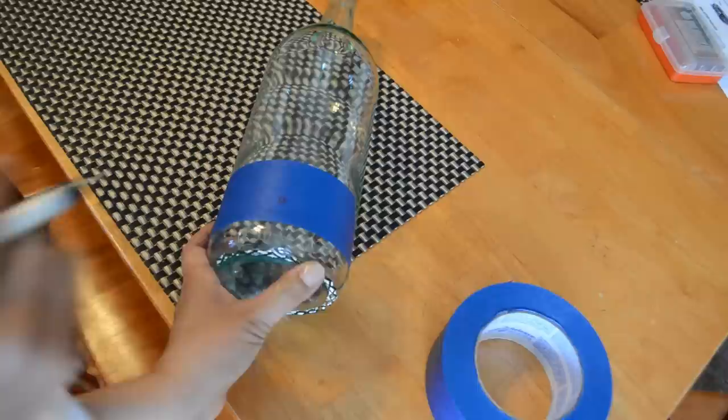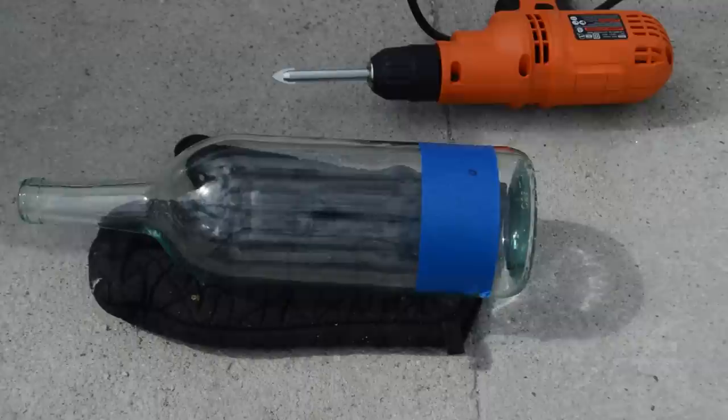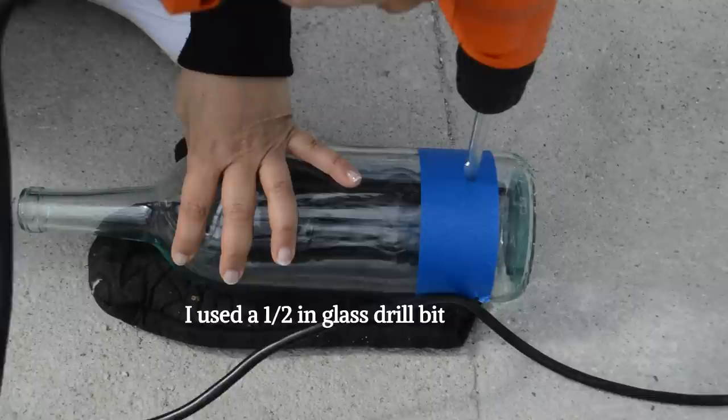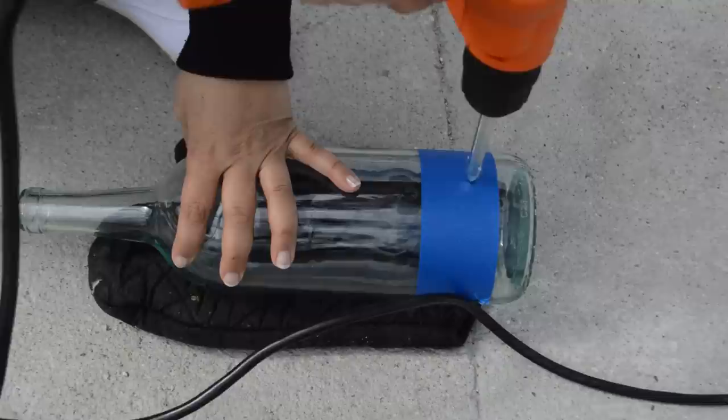Now it's time to drill the hole. There are probably other ways to do this. I'm simply showing you how I did it. I started off slowly and with a light amount of pressure. I just want to get the hole started. I don't want to apply too much pressure because I don't want the drill to slide off or break the bottle.